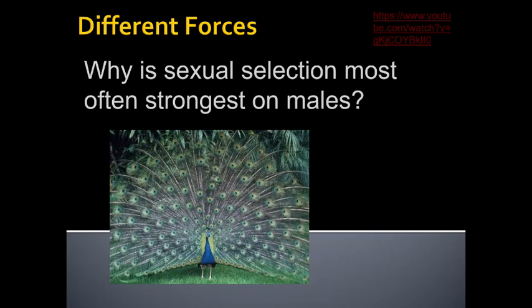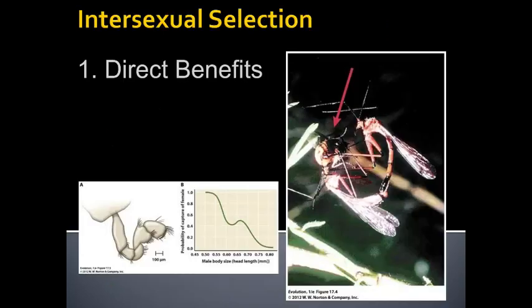The females, by definition, have to have much more investment if they're going to be successful. In some species it's very extreme; in others it's adapted to be less so. There are several different patterns that we notice when we have intersexual selection. The first is something we're going to call direct benefits.